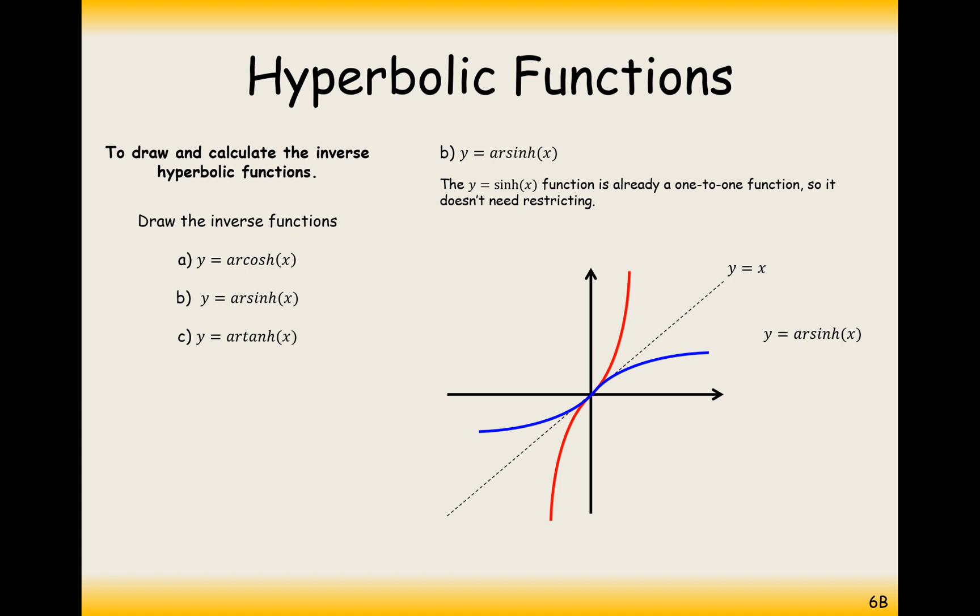So this is the arsinh graph going through at 0, 0. And I'm pretty sure we'll be able to prove it later on that the gradient at this point here is 1. So they are kind of like tangents to each other at this point here, gradient equals 1.